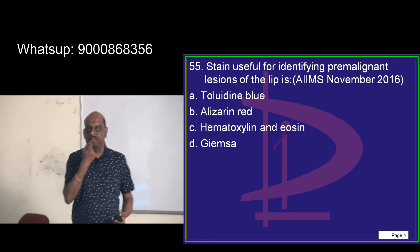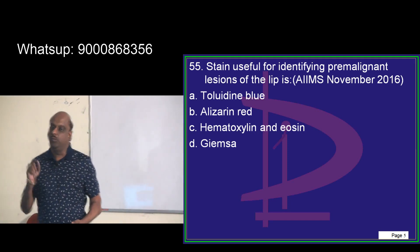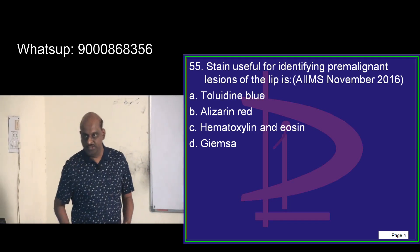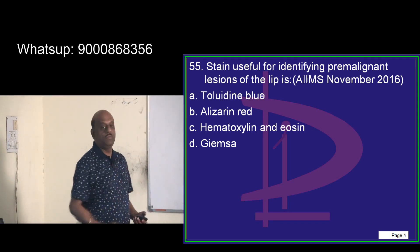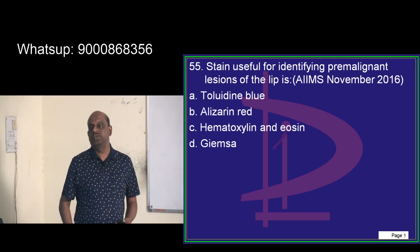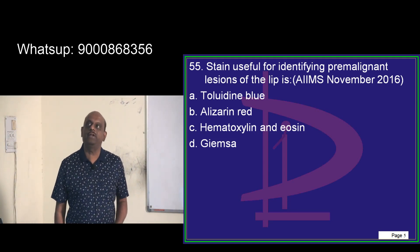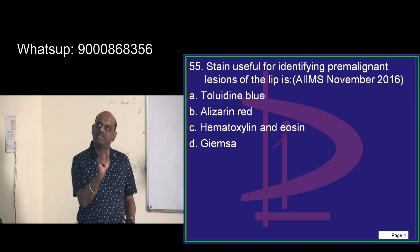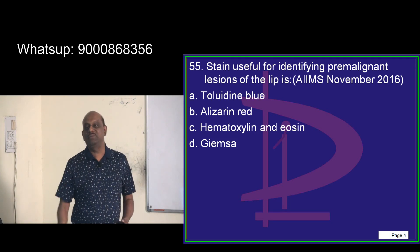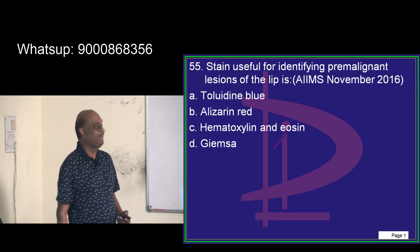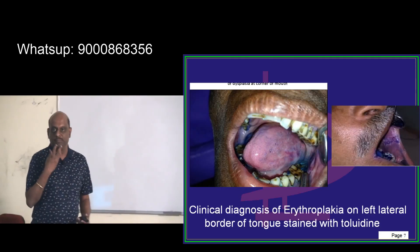Premalignant lesions on the lip — if you want to diagnose them, what stain is used? This is a favorite question of the examiner. Always one stain, and without that there is no AIMS question paper. You should remember: it is toluidine blue.